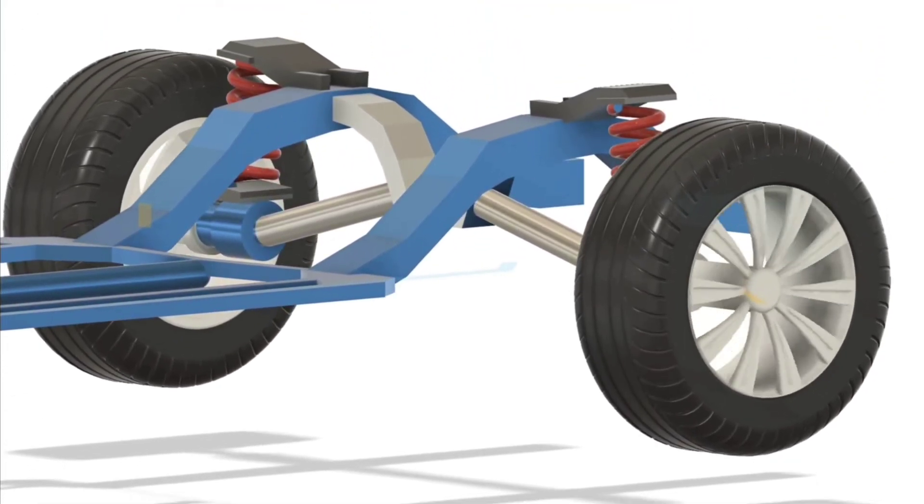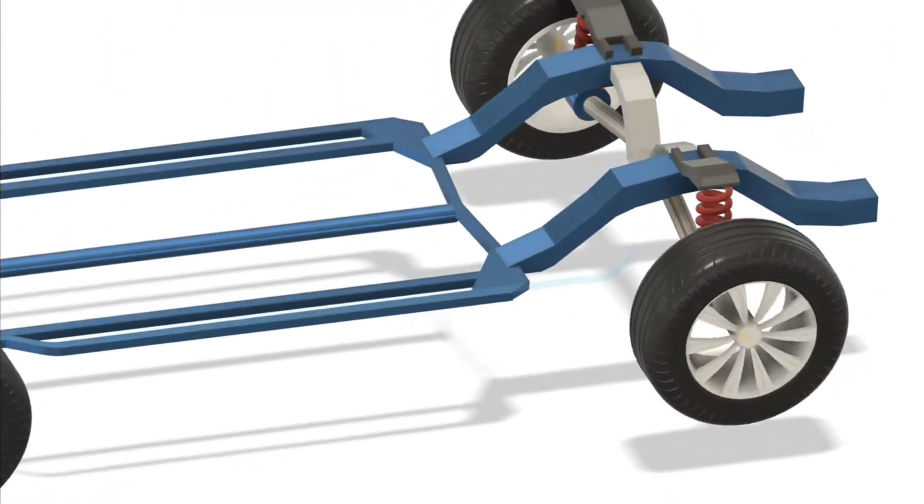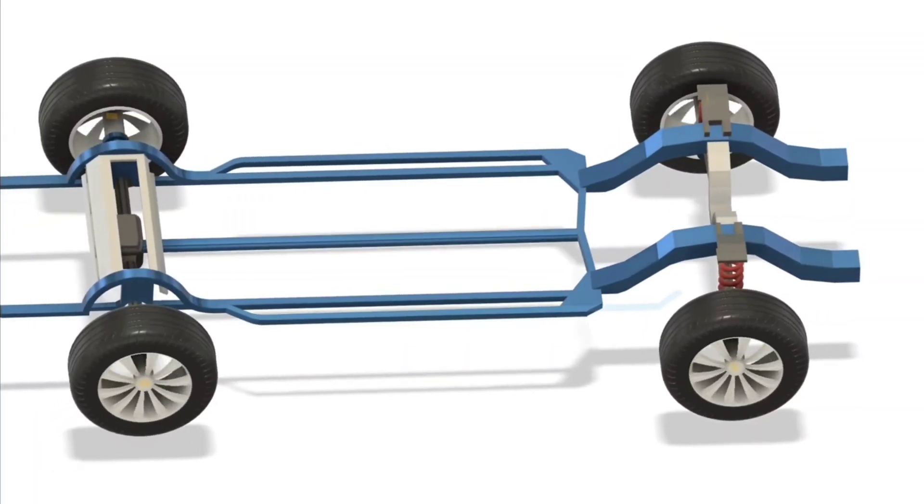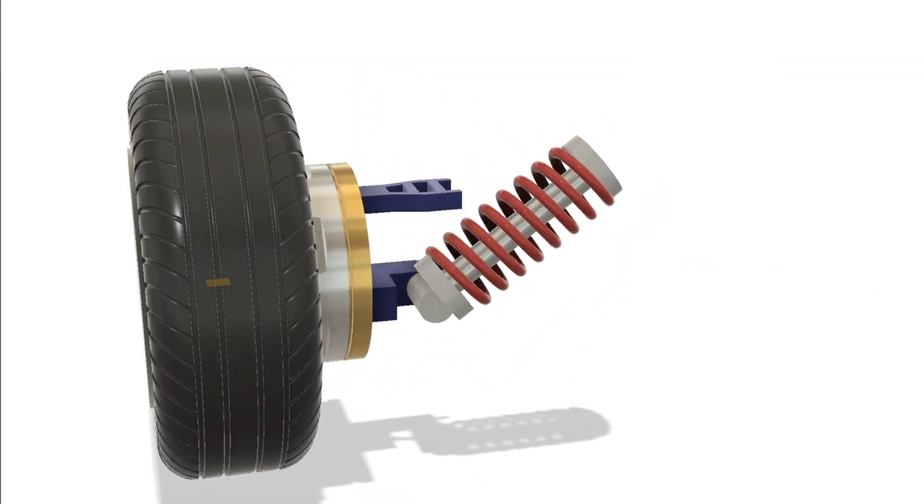Most cars send power from an engine or motor through a long system of shafts, gears and differentials just to move the wheels. But what if the wheel itself was the motor?